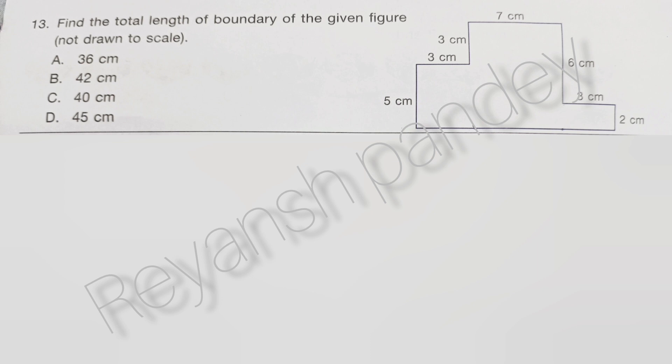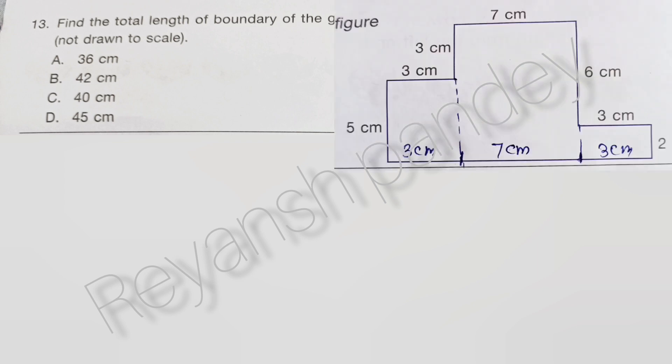Find the total length of the boundary of the given figure. Let's measure and add all the numbers. The answer is B — 42 cm.